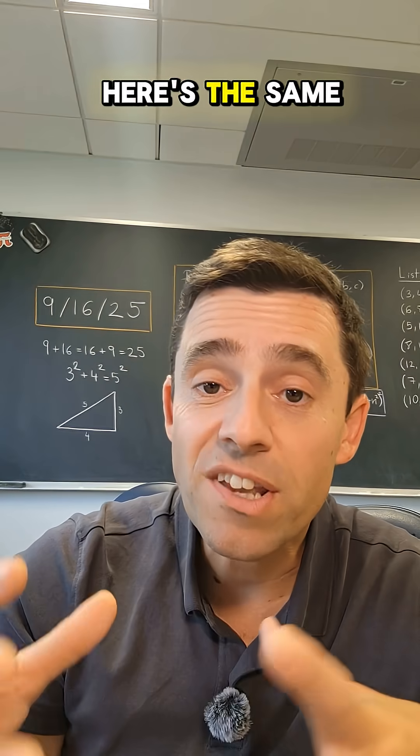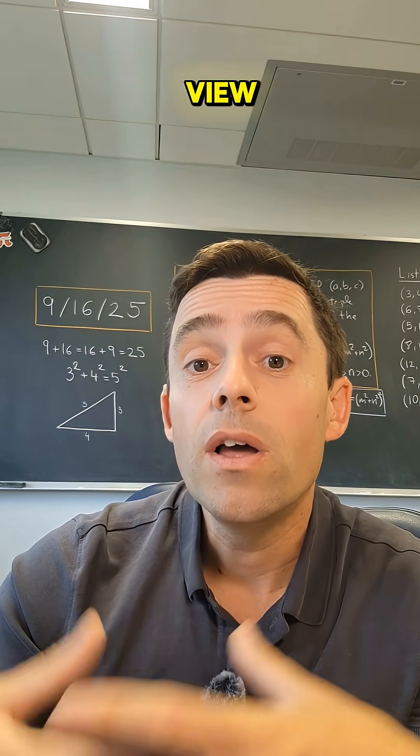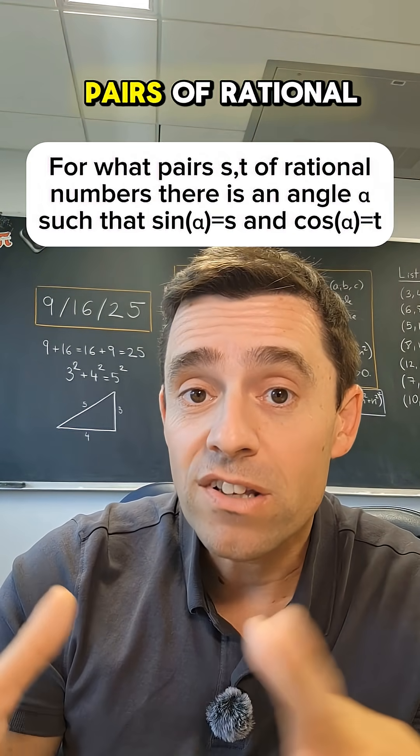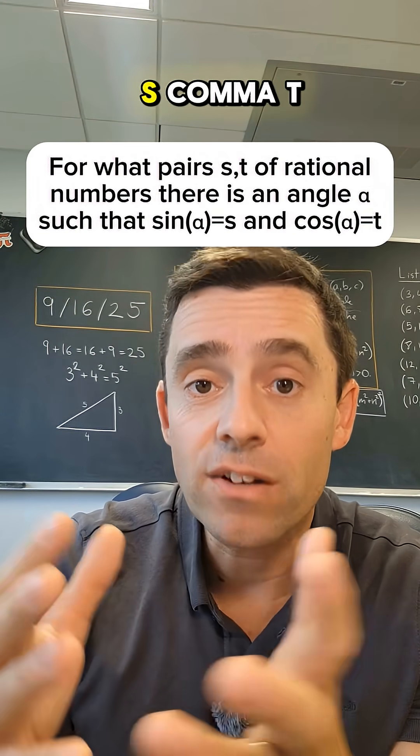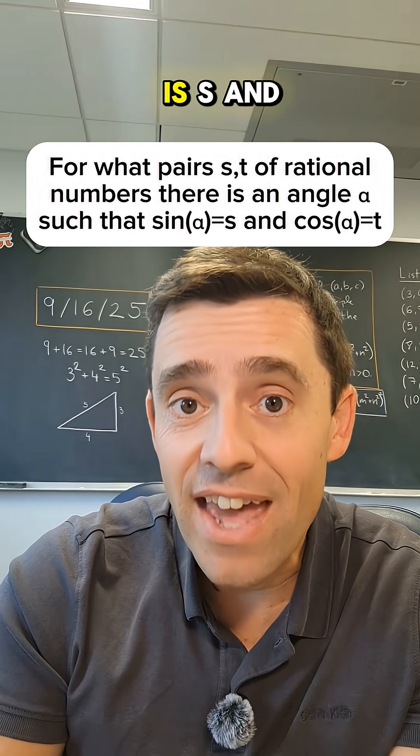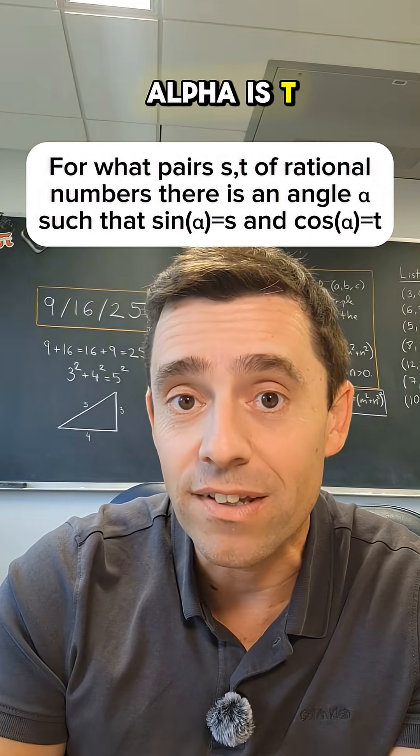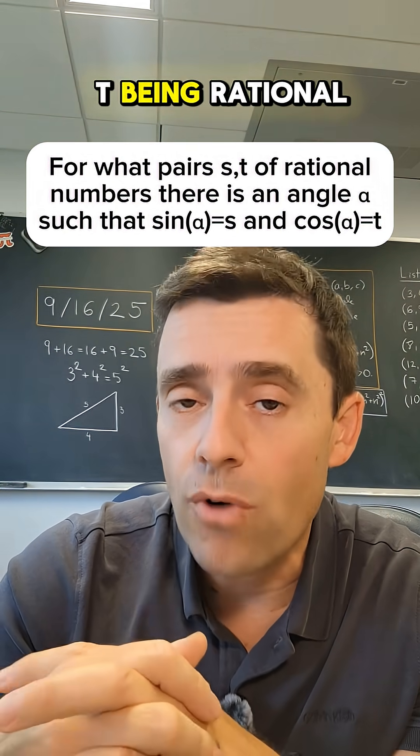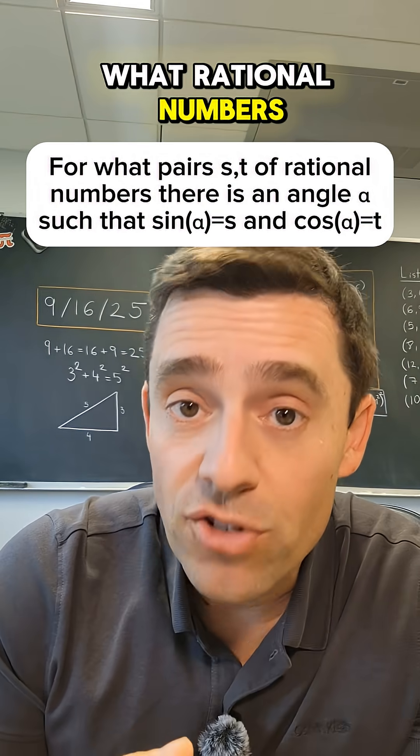What angles are those? Here's the same question but from a different point of view. What are the pairs of rational numbers s and t such that there is an angle alpha such that the sine of alpha is s and the cosine of alpha is t, with s and t being rational numbers? What rational numbers are those?